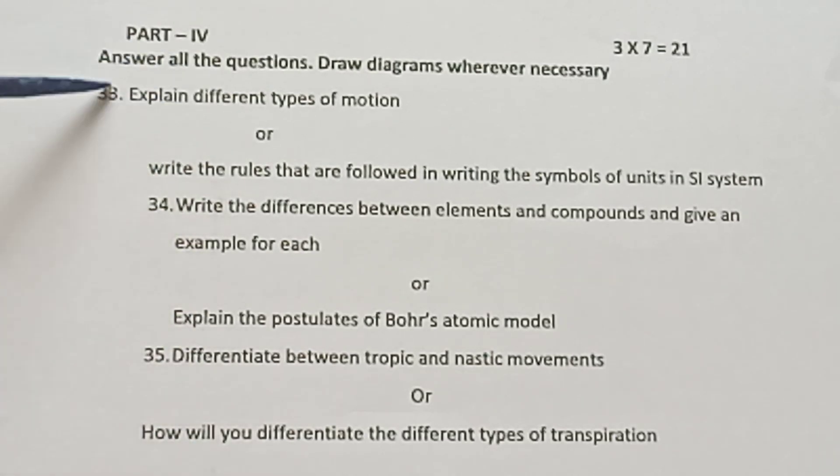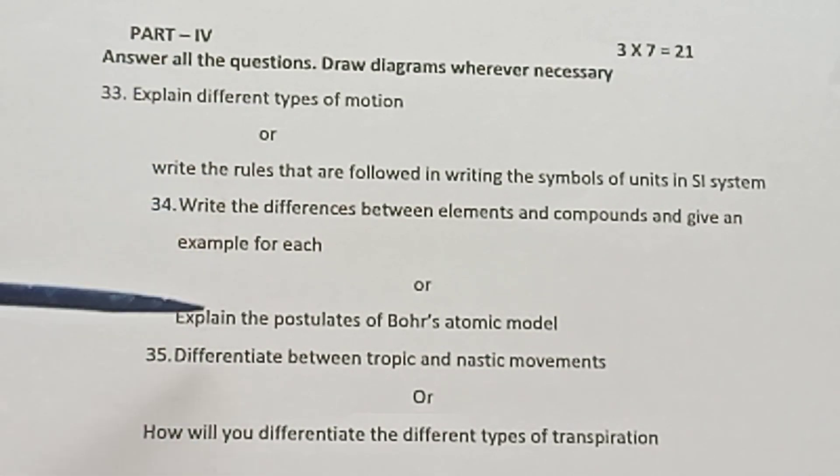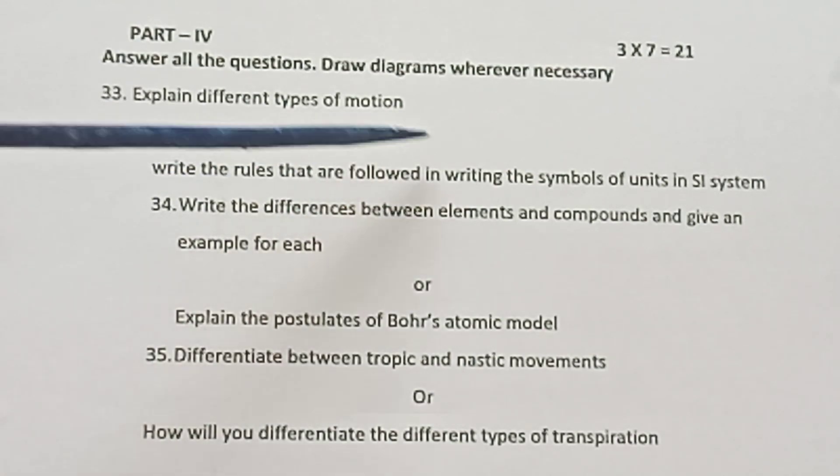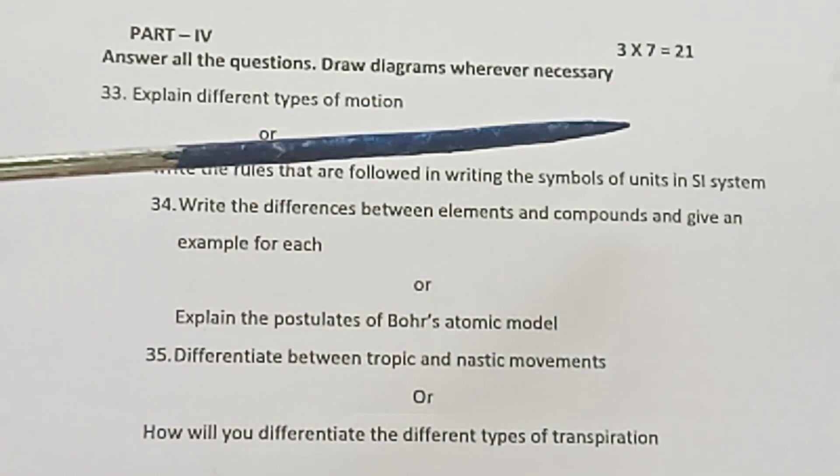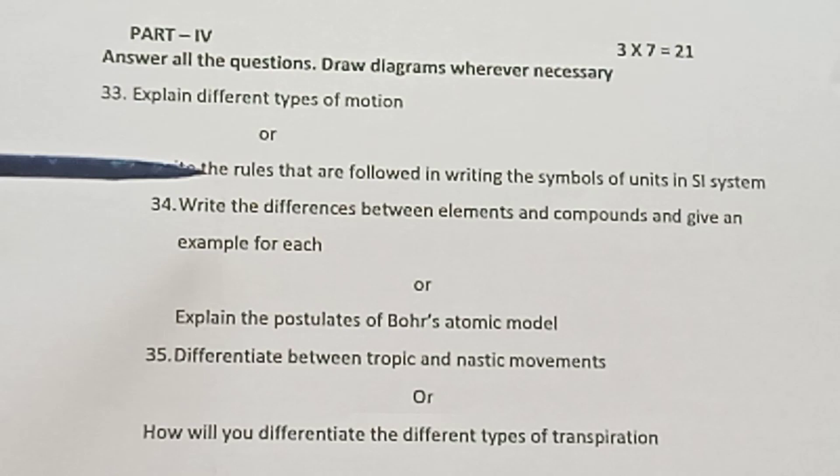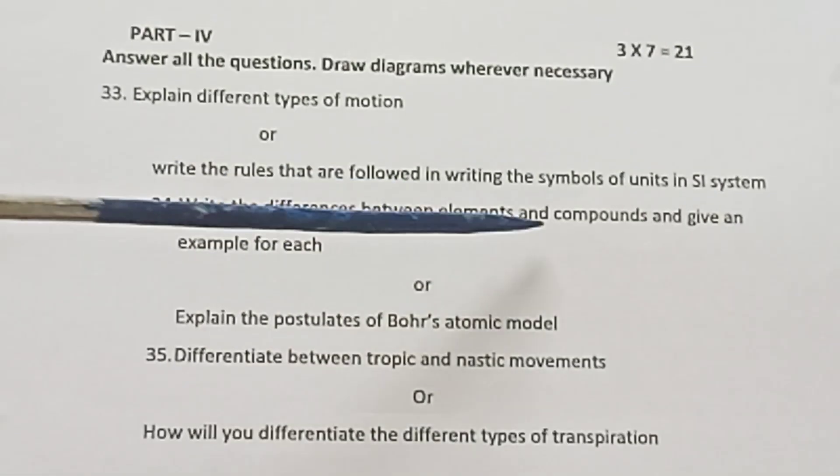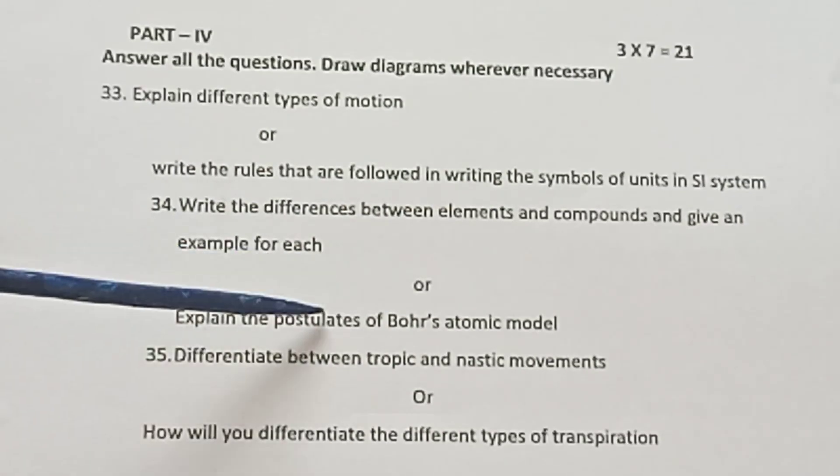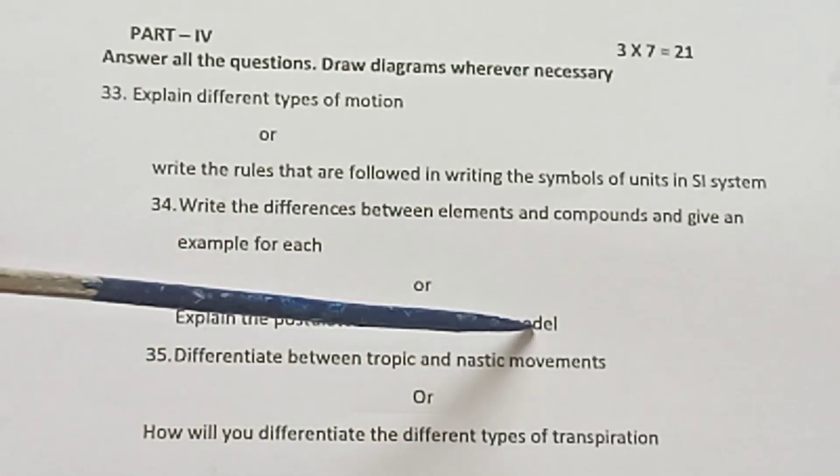Question 33: Explain different types of motion, or write the rules that are followed in writing the symbols of units in SI system. Question 34: Write the differences between elements and compounds and give an example for each, or explain the postulates of Bohr's atomic model.